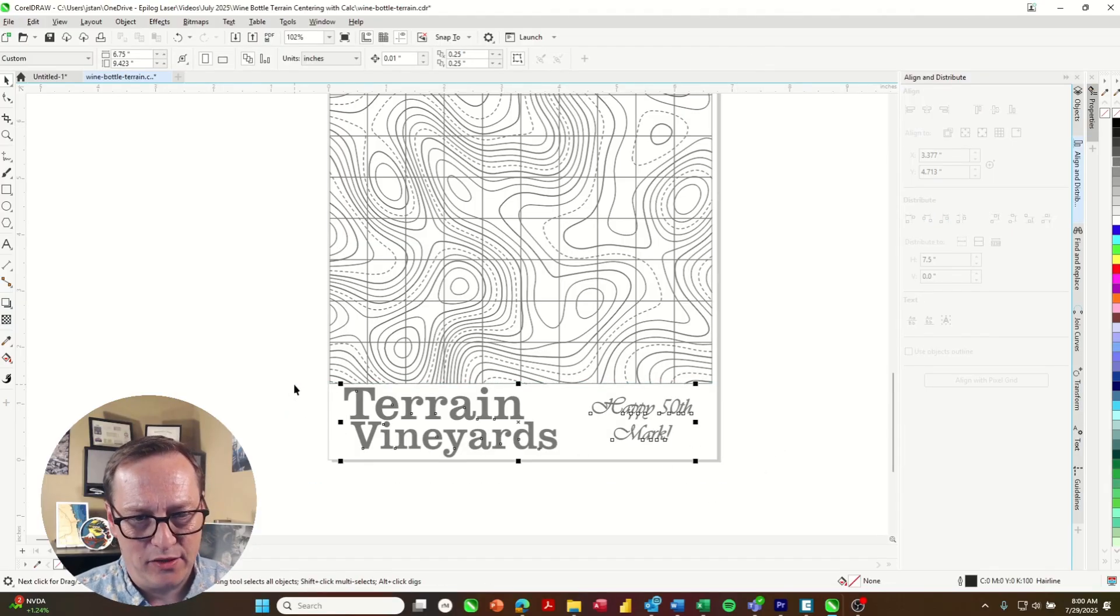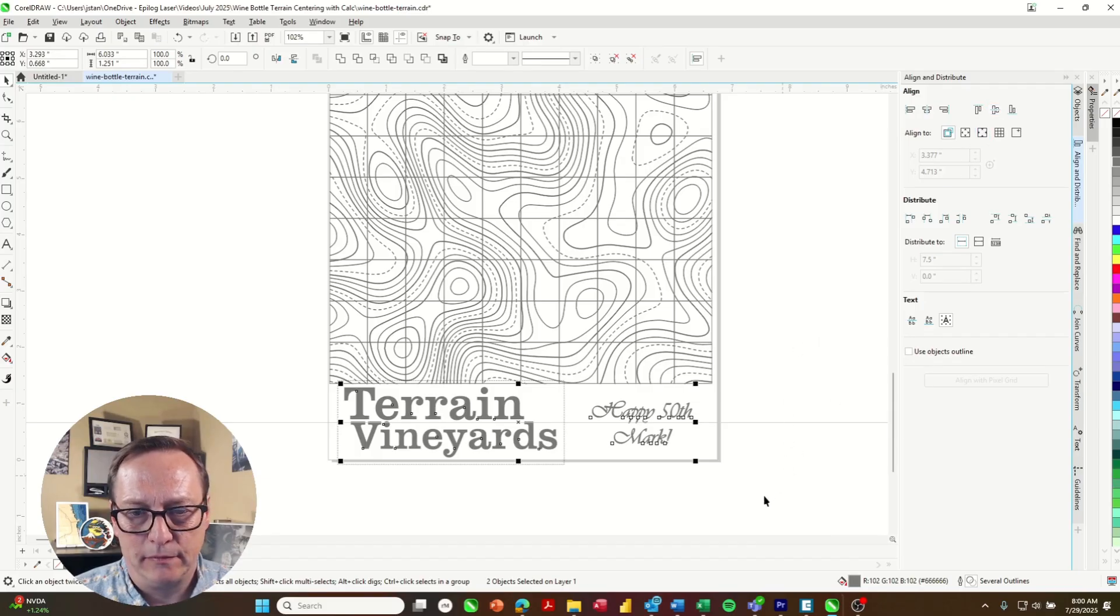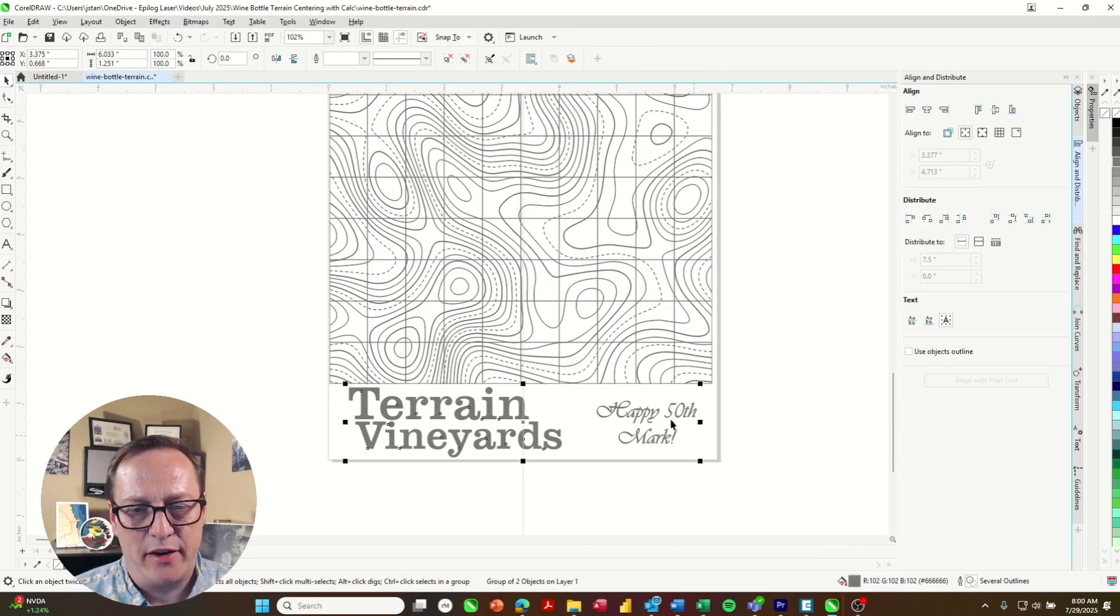So I'm happy with that. I'm just going to grab all of that. I'll align them vertically to each other. And then I'll align it horizontally to the page. So we've centered it under the graphic.